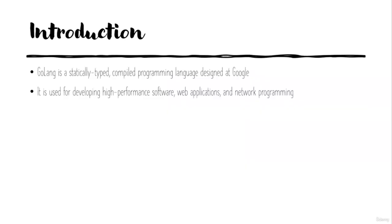Introduction. Golang is a statically typed, compiled programming language designed at Google. It is used for developing high-performance software, web applications, and network programming.